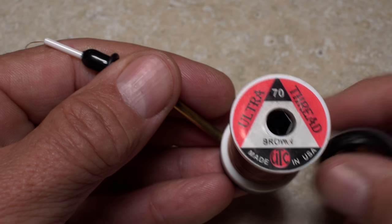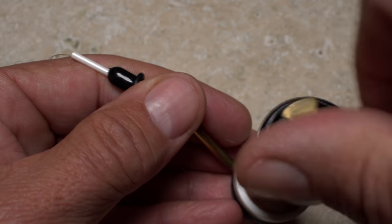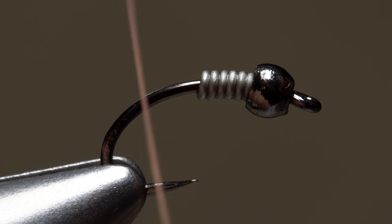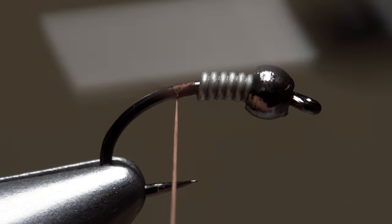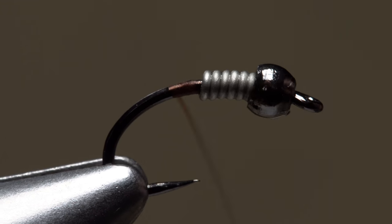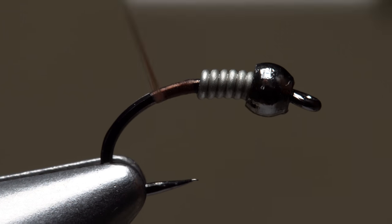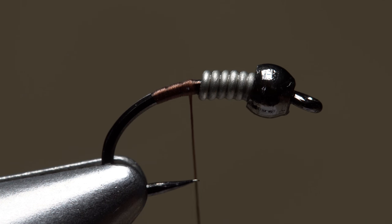For thread, I load a bobbin with a spool of brown UTC 70 denier. Get your thread started on the hook shank immediately behind the weight and take a few wraps rearward before snipping or breaking off the tag. Take a few more wraps to establish a short thin thread base on the shank.